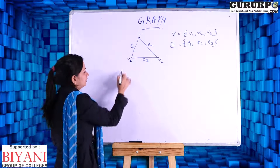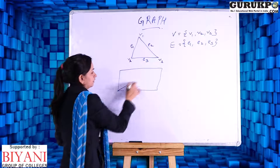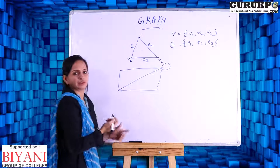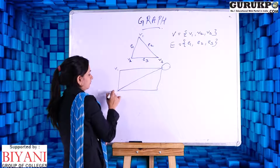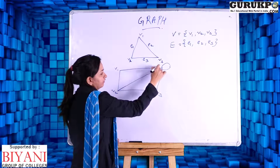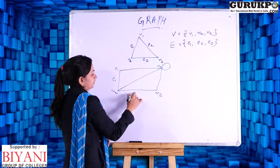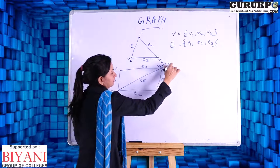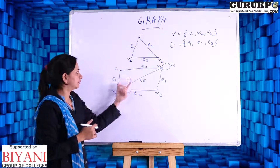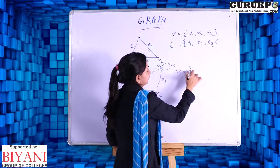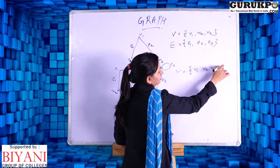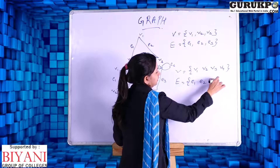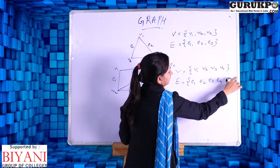Let us have one more example. This is also a graph. I am naming vertices V1, V2, V3, and V4, and naming the edges E1, E2, E3, E4, E5, and E6. So the set of vertices is V1, V2, V3, V4 and the set of edges is E1, E2, E3, E4, E5, and E6.